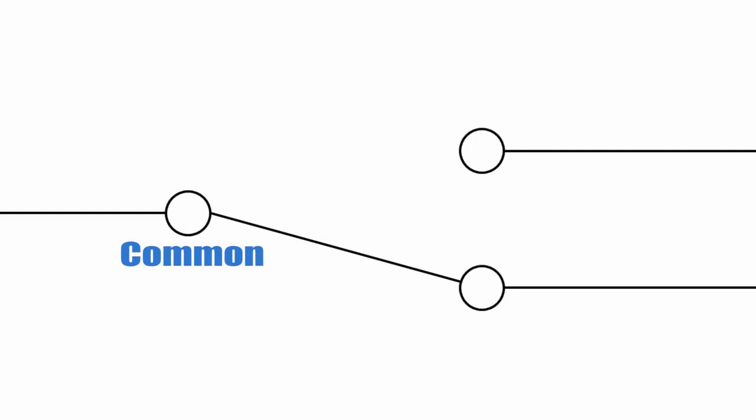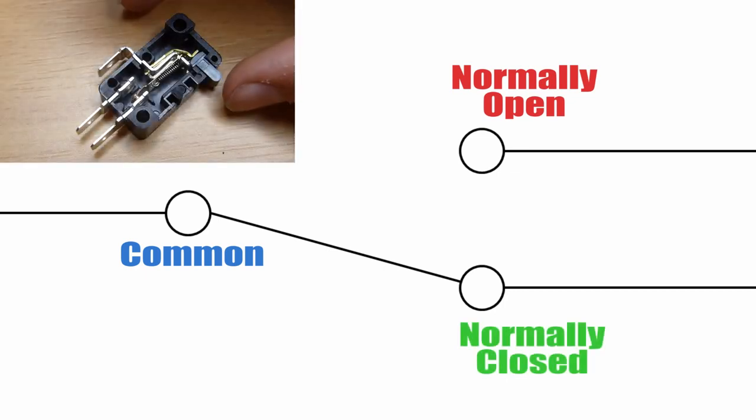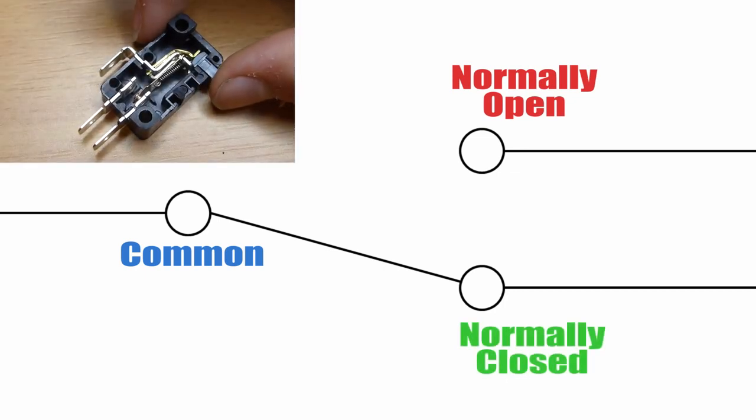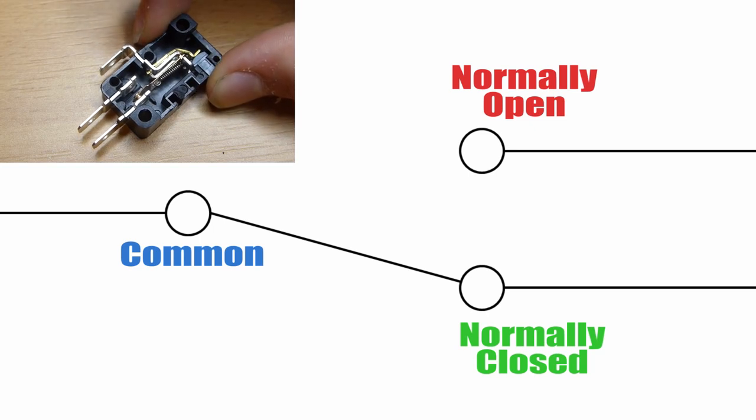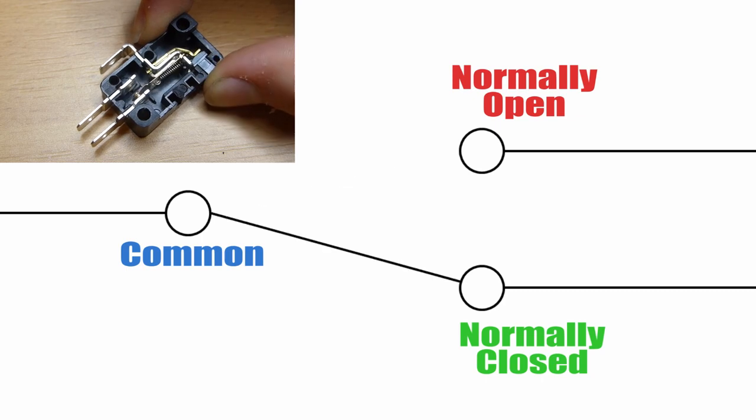Then, these two here are called the normally open and the normally closed. When the switch is in its resting position, the normally closed is connected to the common. When pressed, the common connects to the normally open but springs back after it is released.